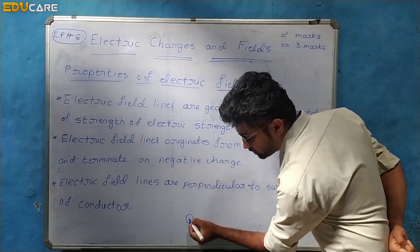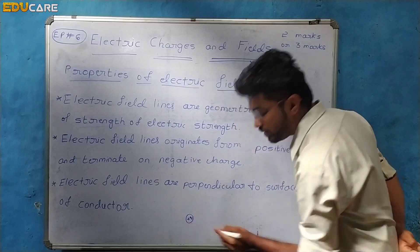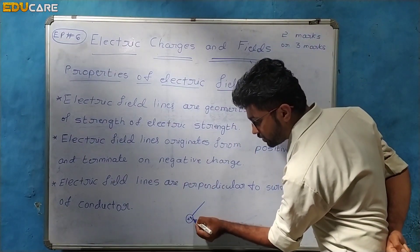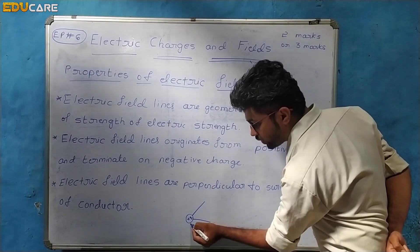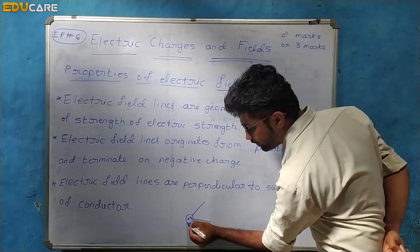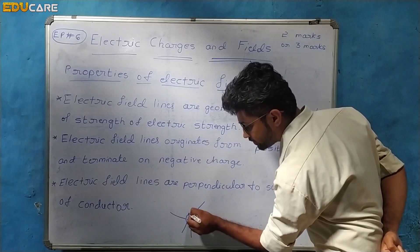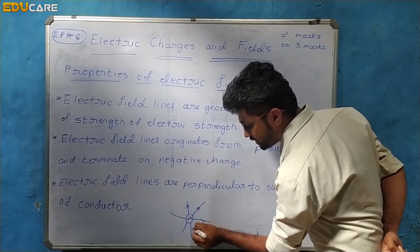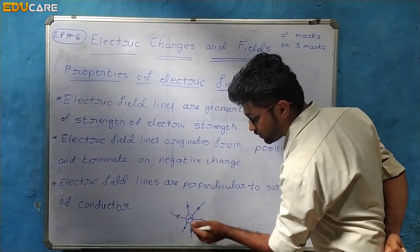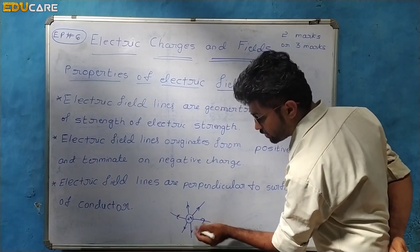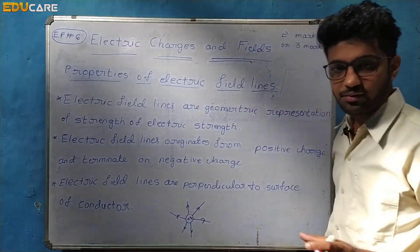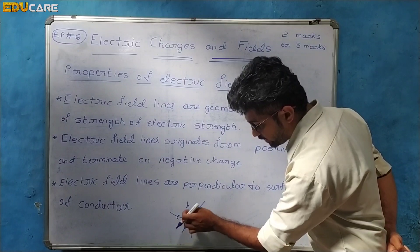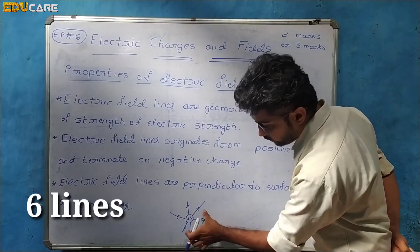Here is a plus Q charge. The electric field lines are radially outwards from this positive charge. Here in this diagram, we can count: one, two, three, four, five, six lines — so there are 6 electric field lines representing the strength of the field.